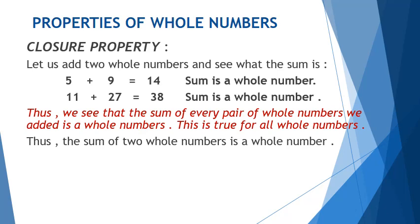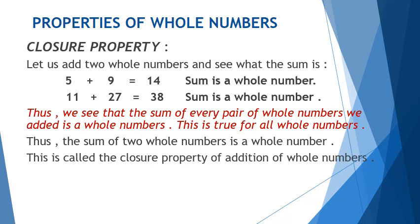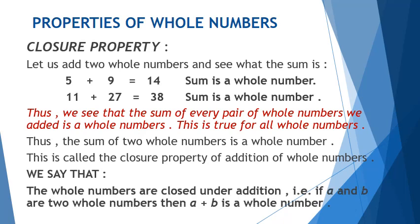So, the sum of two whole numbers is a whole number. This is called the closure property of addition of whole numbers. We say that the whole numbers are closed under addition. That is, if a and b are two whole numbers, then a plus b is a whole number. Here, a and b are variables.